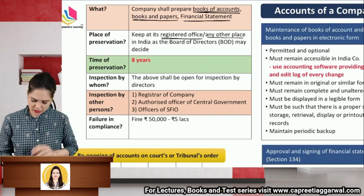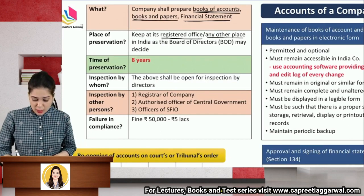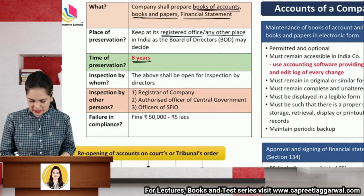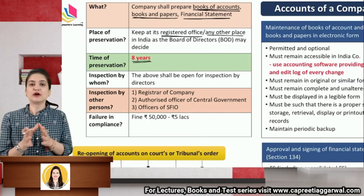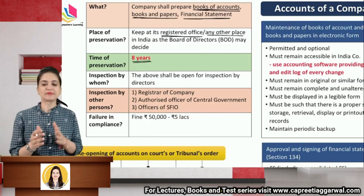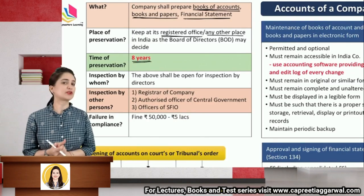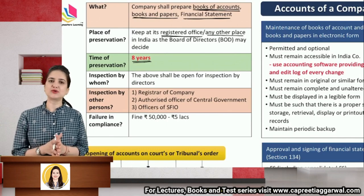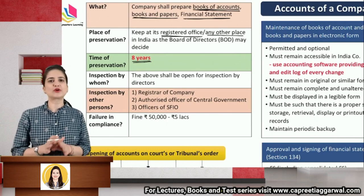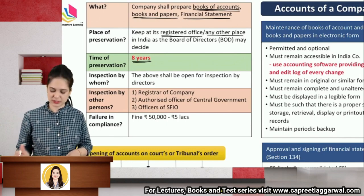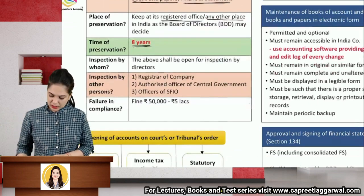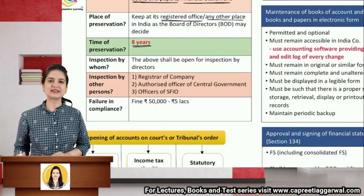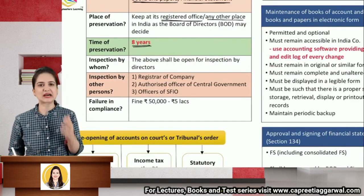The books should be preserved for a period of eight years. But if the business is only four years old, then you need to preserve the books for all four years. Now, regarding inspection — who can inspect these books, documents, and other papers?